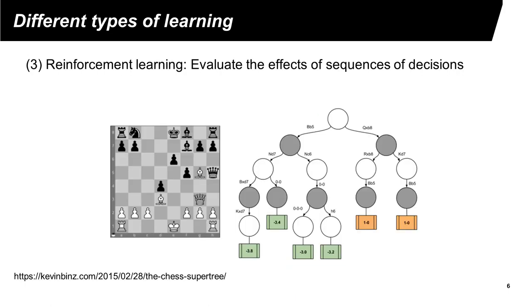In the previous two examples, for supervised and unsupervised learning, the decisions are pretty much instant. For supervised learning, the teacher shows an image and the learner decides whether that image is a panda or not. For unsupervised learning, the learner decides whether the image belongs to one of three categories. If a new image shows up, the learner may put it into one of those categories. In many other situations, the correctness of decisions cannot be determined immediately.